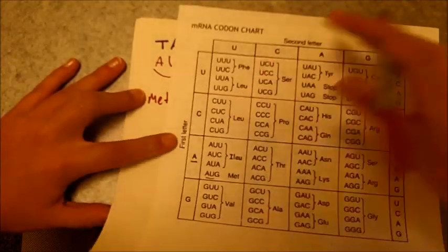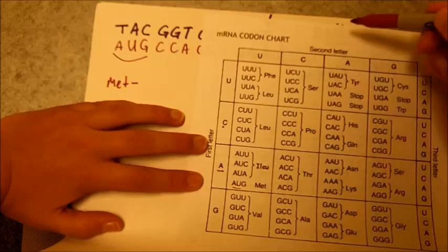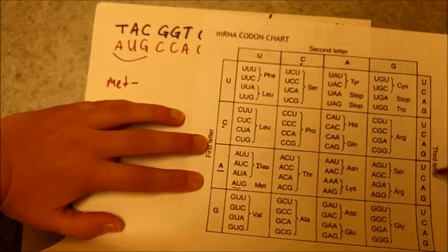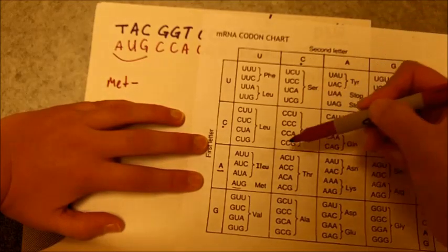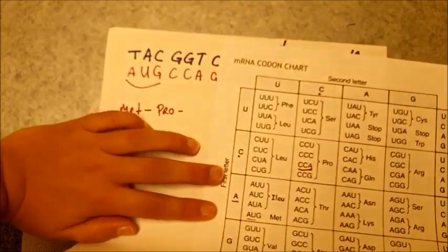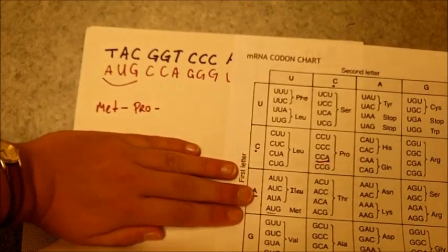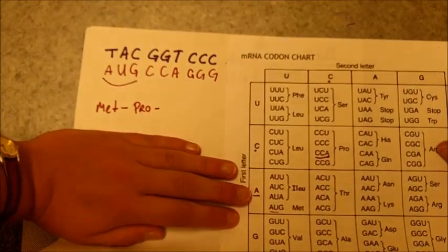Our second one, same thing, we find C, C, A. C, C, third letter is A. Right here, C, C, A is going to match up with the amino acid P, R, O, pro. There's actually longer names for these, but I don't want to confuse you now. So we're just going to use our abbreviations.